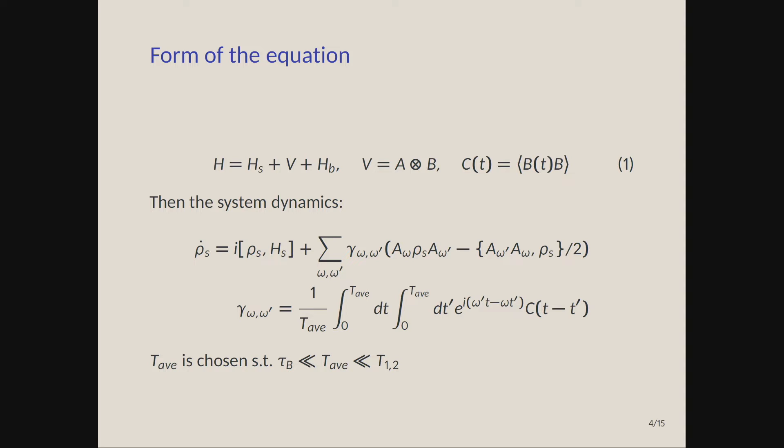The equation looks like a Lindblad equation, only the frequencies on the different sides of density matrix are different. If you look at the rates, these gammas, they depend on one parameter. This parameter is the time averaging time, and that hints on the fact that to derive this equation we needed to time average something.